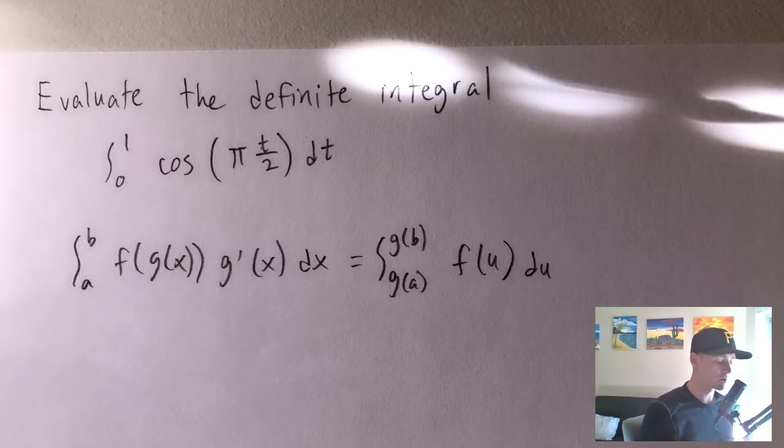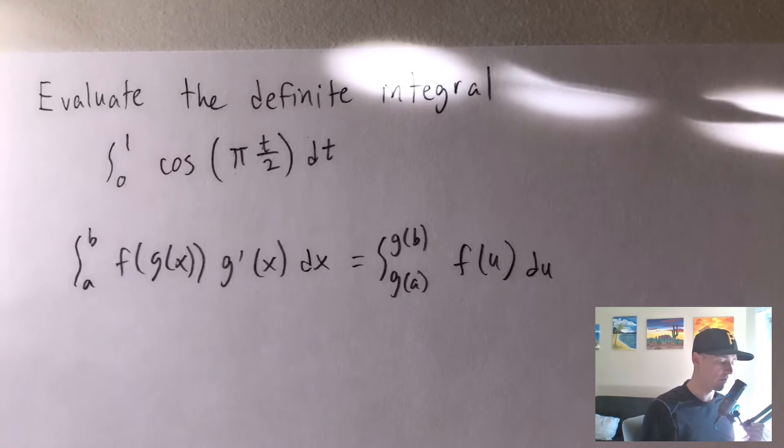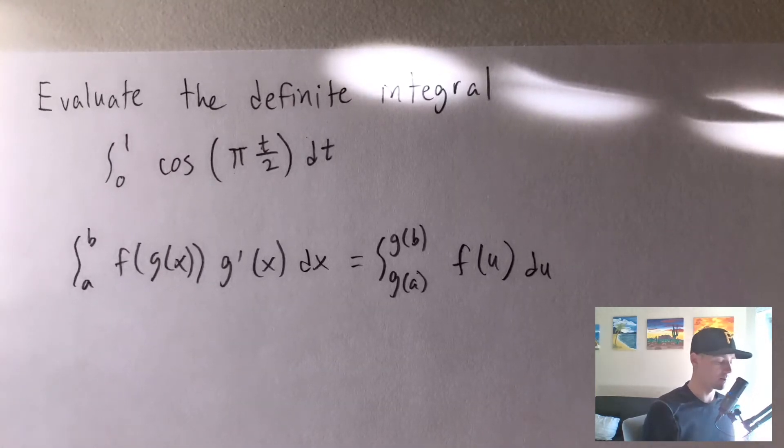However, this is a pretty common trick with integrating with u-substitution because even though the derivative of that thing is not somewhere else in the function, the derivative of that thing is just going to be a constant, right?